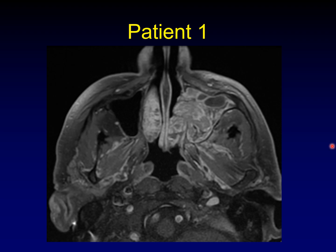This is the key image for patient number one. This type of enhancement that we're seeing within the mass is called cerebriform enhancement, and it's associated with a very particular entity: inverted papilloma. This mass arises in the lateral wall of the nasal cavity or the medial wall of the maxillary sinus. It extends both into the sinus and into the nasal cavity. This mass will sometimes have characteristic calcifications, but not always. Importantly, inverted papillomas may de-differentiate into squamous cell carcinoma, so it's important that they be removed.